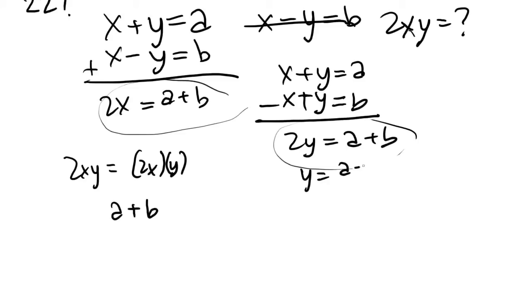Y is going to be a, oh, I'm sorry, a minus b. Y is going to be a minus b over 2. So a plus b, y is going to be a minus b over 2.